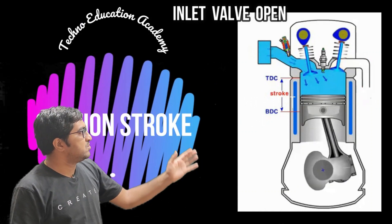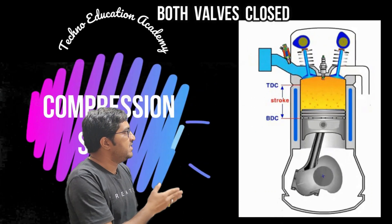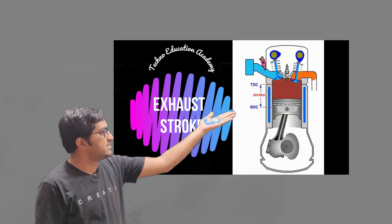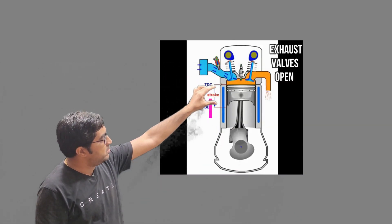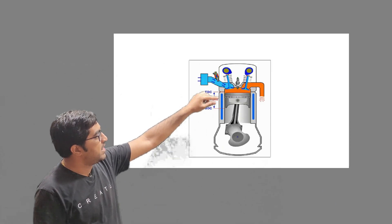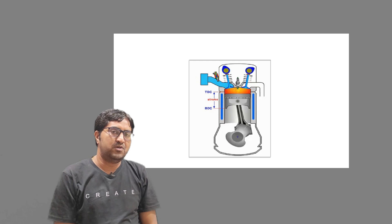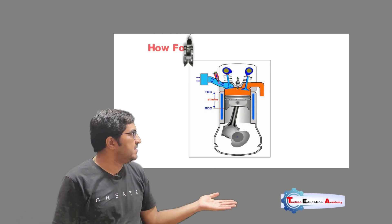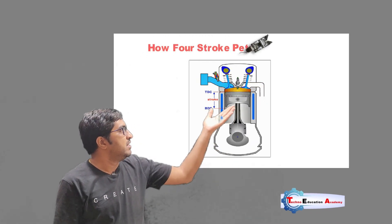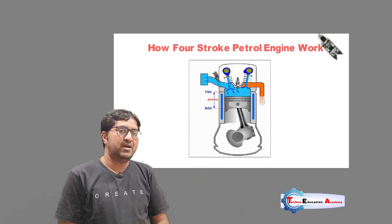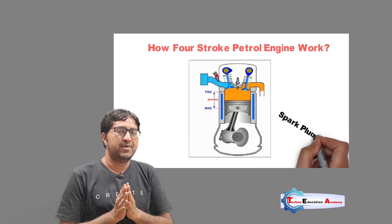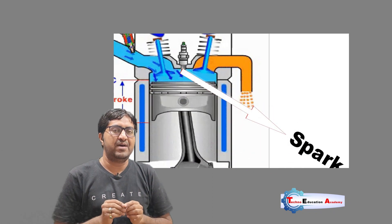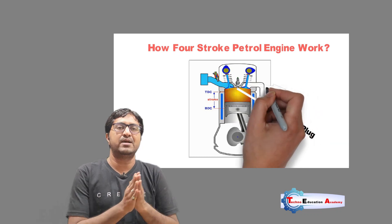There are two types of volume in an IC engine: clearance volume and swept volume. Clearance volume is the volume remaining between the piston and cylinder head when the piston travels from bottom dead center to top dead center. This volume is provided so the piston does not strike the engine head, and also to ensure sufficient volume is available for combustion of fuel when it enters from the intake.